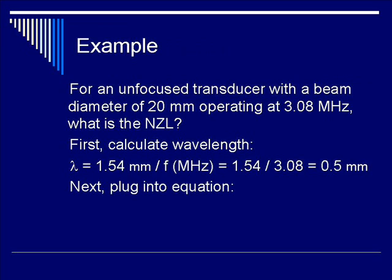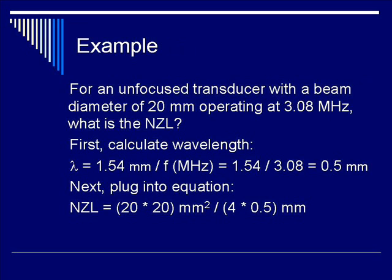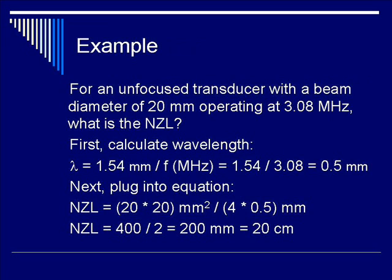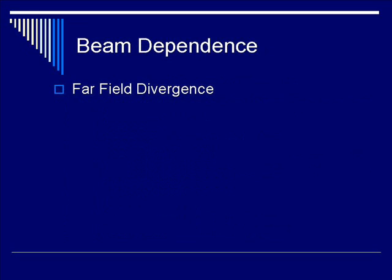Next, let's plug into the equation for NZL. We know that D is 20 millimeters, so 20 times 20 millimeters squared divided by 4 times 0.5 millimeter (the wavelength). You get NZL equals 400 divided by 2, or 200 millimeters, which equals 20 centimeters. Thus, the beam diameter is minimum at 20 centimeters from the transducer.